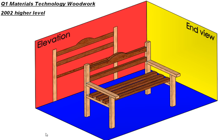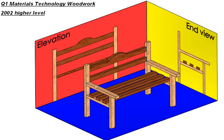If we hold a torch and shine it in this direction on our SOLIDWORKS model, where is our projected view going to go? It's going to go on this plane here, so that's going to give us our end view. That will mean that our elevation is going to go on the left hand side of our page and our end view is going to go on the right hand side of the page.